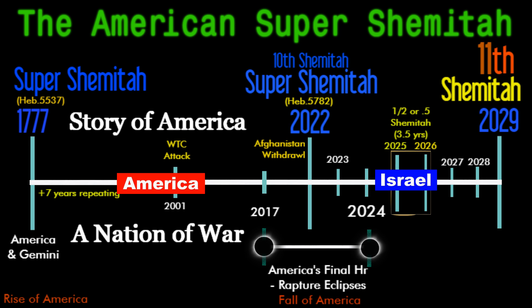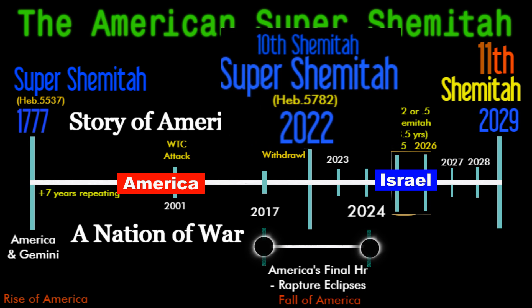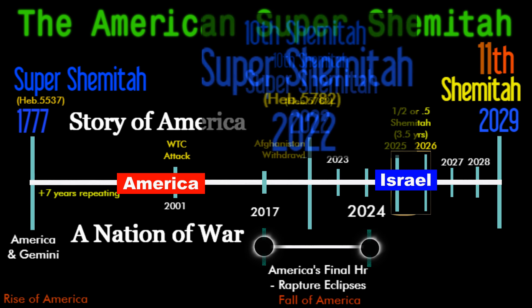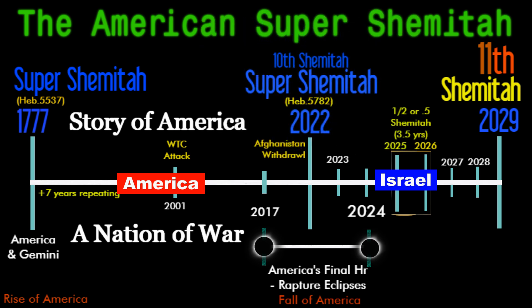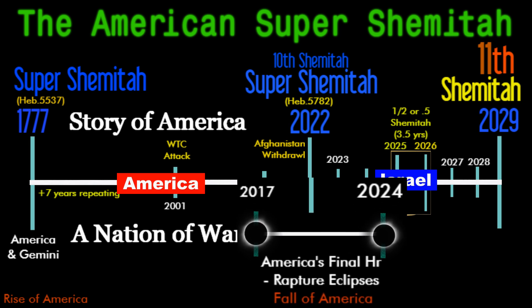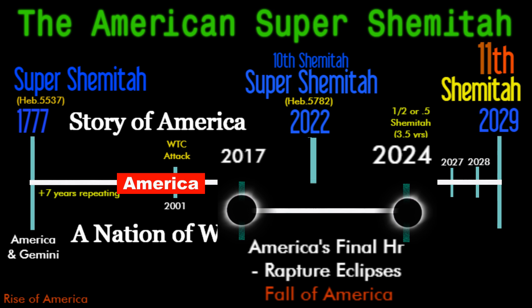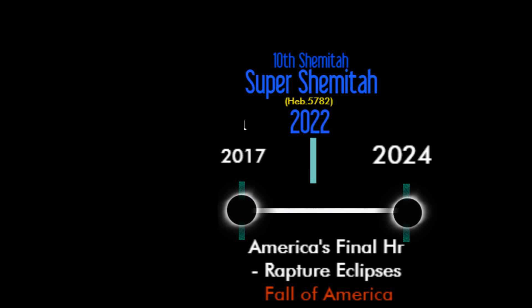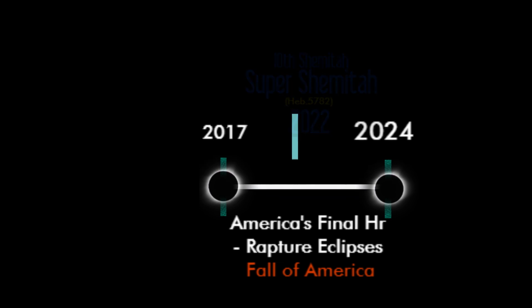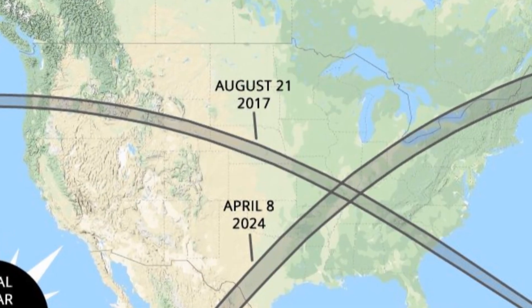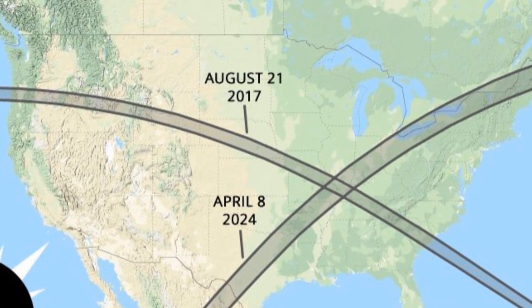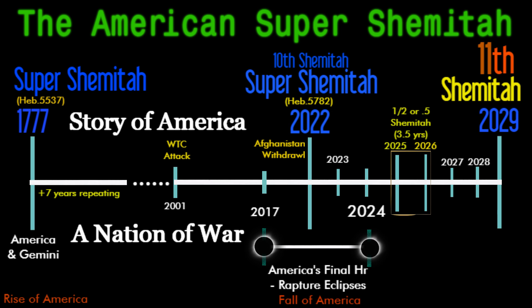The fall of America puts us right into the 11th Shemitah, which is why America is uniquely connected to Israel and why this Super Shemitah is very significant for both groups. This leads into our final section — the final hour — represented by this twin set of solar eclipses that essentially circle this Super Shemitah as very significant and form an X over America, highlighting the fall of America.